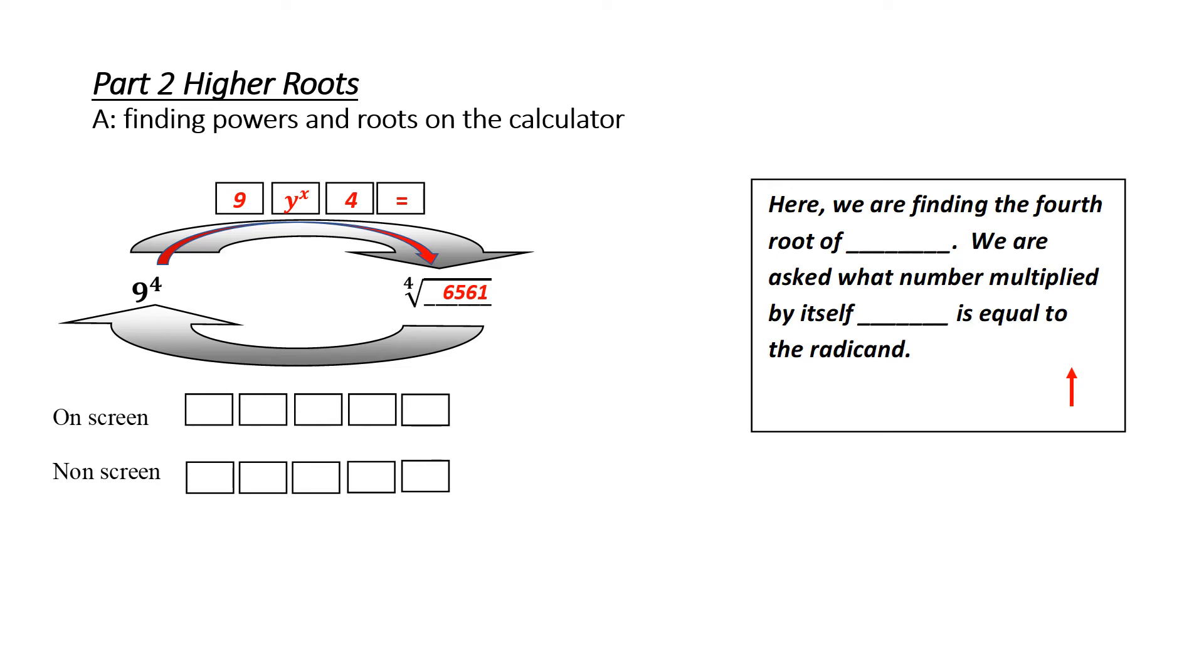Now, if I wanted to work backwards, I would be asking myself what is the fourth root of 6561. What is this really asking? It's asking us what number, multiplied by itself, four times is equal to the radicand or 6561. Now, doing a higher power and a higher root are inverse operations, which means we do the opposite. So when we do the opposite of a button, we use the second function or shift or inverse or arrow going up to do the opposite. So what we need to know is what type of calculator do we have? Do we have an on-screen or a non-screen?